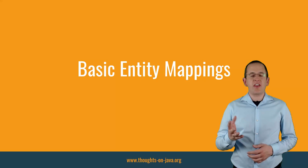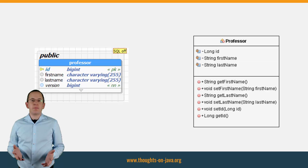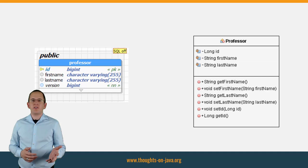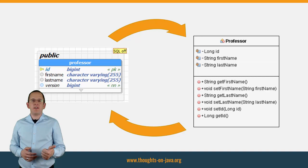JPA and all its implementations provide a set of intelligent defaults that make it very easy to define basic entity mappings. As long as the database table and its columns use the same name as the entity and its attributes, you can rely on these defaults in your mapping definition. You then just need to do two things: declare that your Java class is a JPA entity, and specify which attribute maps the primary key column and identifies the entity object.